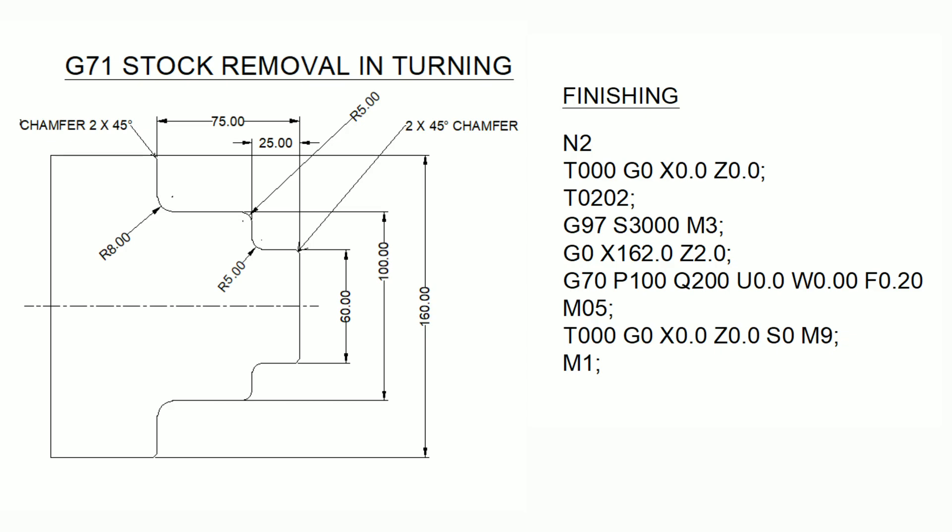Then M05 spindle stop, return to home position, coolant off M9, and M1 optional stop. This is all about the G70 finishing cycle. I hope you understand this program — we will see you in the next video, thank you!